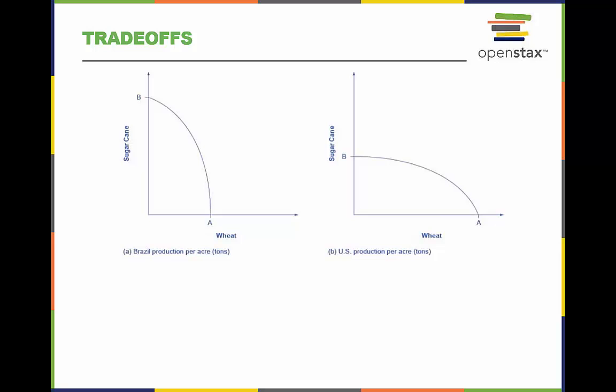Conversely, the opportunity cost of sugarcane is lower in Brazil. The U.S. has a comparative advantage in wheat and Brazil has a comparative advantage in sugarcane.